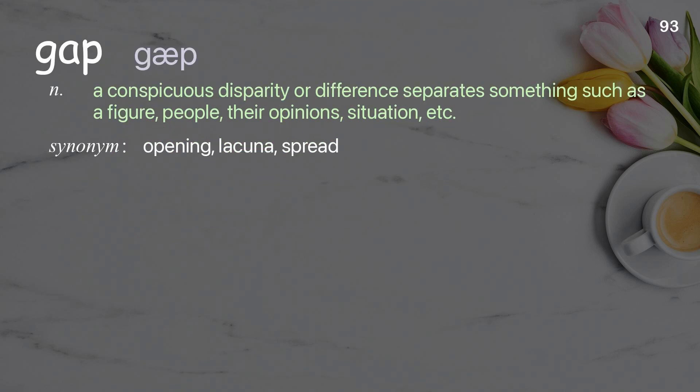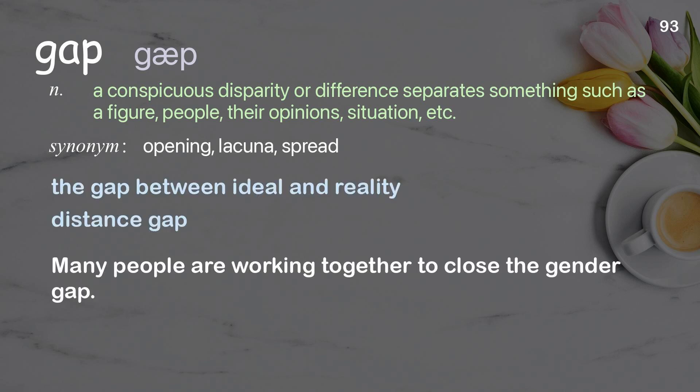Gap: A conspicuous disparity or difference that separates something such as figures, people, their opinions, situations, etc. Examples: The gap between ideal and reality. Distance gap. Many people are working together to close the gender gap.